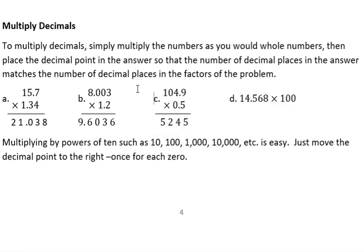For the third example, 104.9 times 0.5. Well, we have 2 decimal places in the factors, so our decimal point should go here, so that we have 2 decimal places in our answer: 52.45.